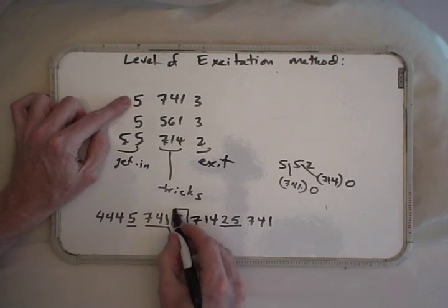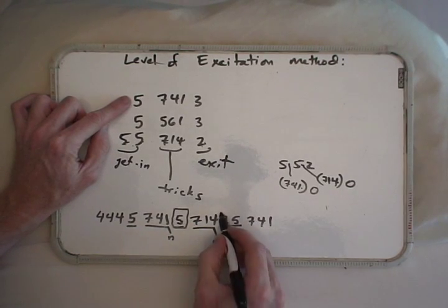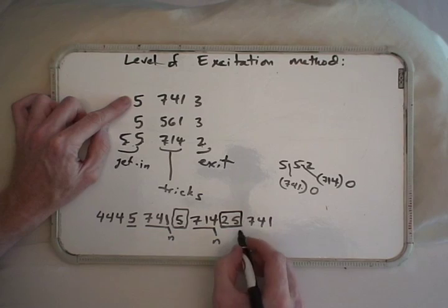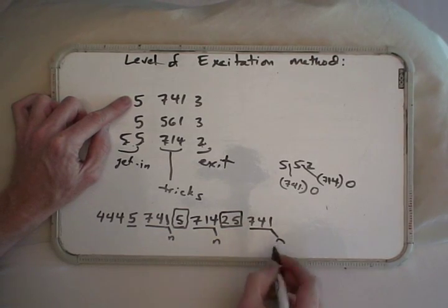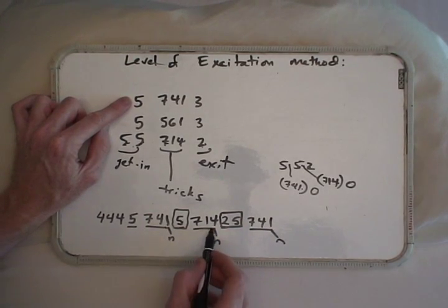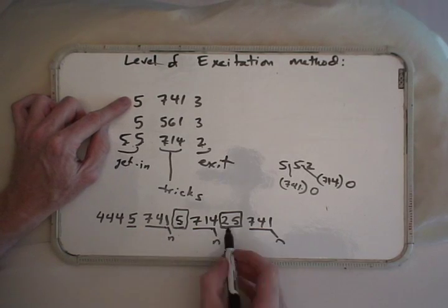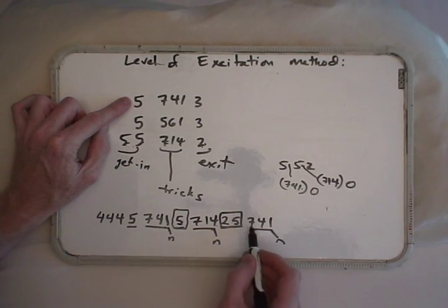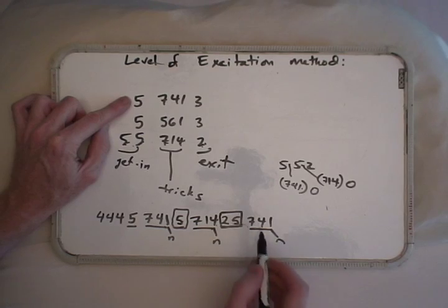Using the level of excitation method, I have identified transition sequences that get you from 741 into 714—the answer is just a 5. And they get you from 714 into 741—the answer is a 25.